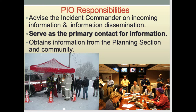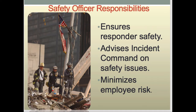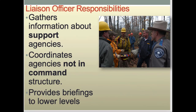The public information officer reports directly to the incident commander. The safety officer is responsible for the safety of everybody on site, usually working in direct coordination with the operations chief, who is closest to the hazards. The safety officer minimizes risk to everybody on site and advises the commander on areas of high risk. The liaison officer — sometimes dual-filled by the public relations officer — gathers and coordinates information from outside entities that are helping but not directly within the command structure.